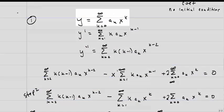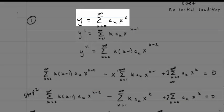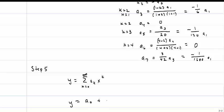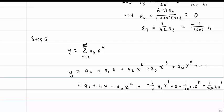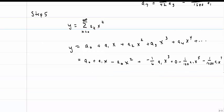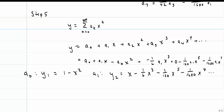Now for the final step, we plug all the a sub k values back into our original solution y equals the summation of a_k times x to the k. We fill in a0, a1 x, a2 x squared, a3 x cubed, and so on. Grouping all the a0 terms together and all the a1 terms together, we can write y equals a0 times y1 plus a1 times y2. It may not look pretty, but it is a valid series solution — and would be straightforward for a computer to calculate.